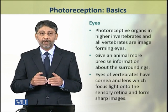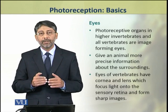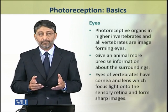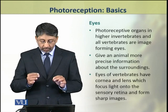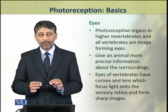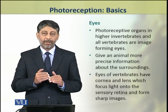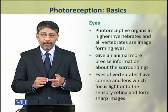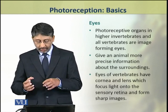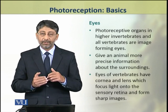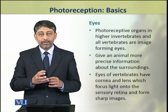The photoreceptive structures of higher invertebrates and vertebrates are image-forming eyes. Eyes give an animal more precise information about its surroundings. The eyes of vertebrates have a cornea and lens which focus light onto the sensory surface of the eye, called the retina, forming sharp images.